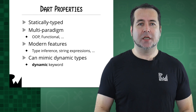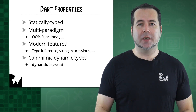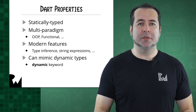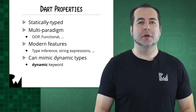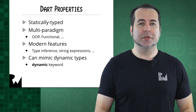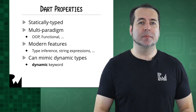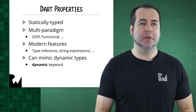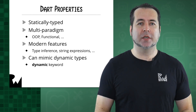Dart is statically typed, which means types must be specified at compile time and cannot change at runtime. Dart facilitates both an object-oriented style of programming as well as a functional style. Dart has modern features such as type inference and the embedding of expressions within strings, called string interpolation or string templates in other languages.